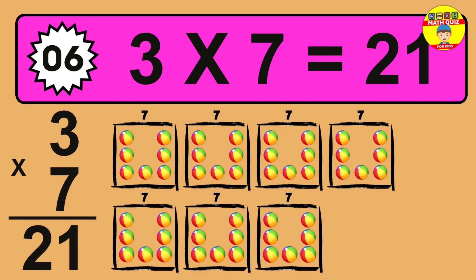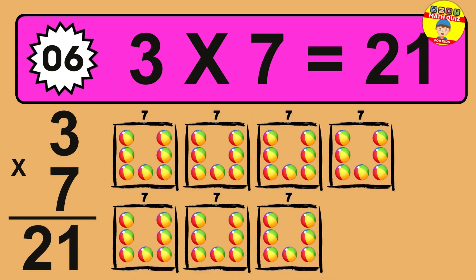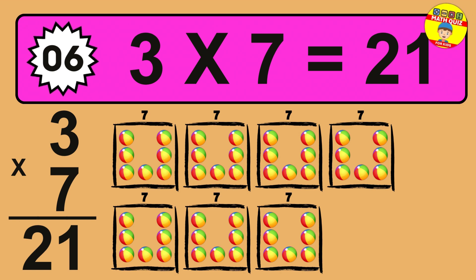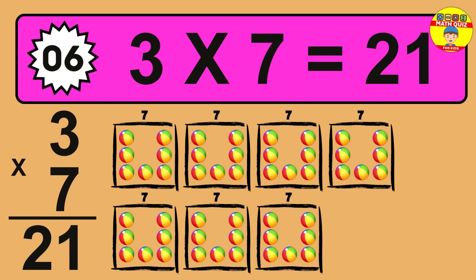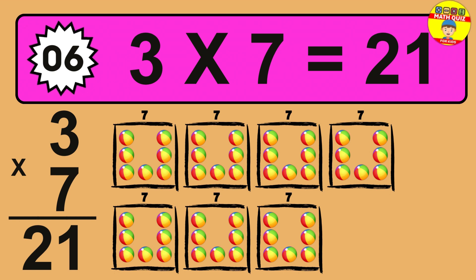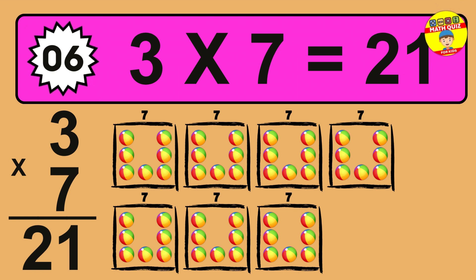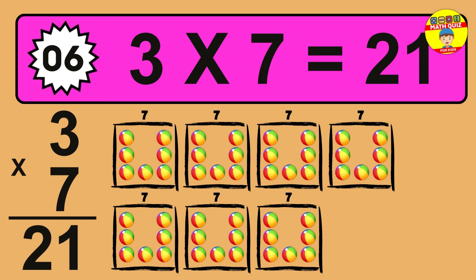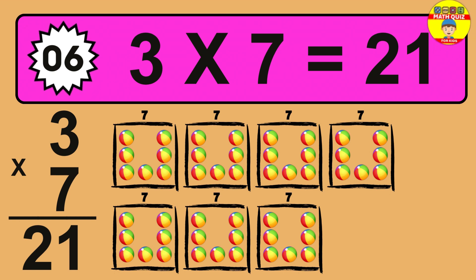The answer is 3 times 7 is 21. To calculate, we have 3 groups with 7 balls each one. So how many balls do we have? 21 balls.